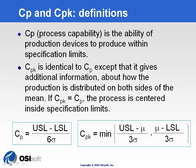CPK takes into account that your process may not be centered on your target value — there could be a slight shift between the average of the process and the target value. Whichever side, upper or lower, is smaller due to that shift is taken into account by CPK. CPK cannot be greater than CP; it is equal to or less than CP, making it a higher constraint on the process to truly assess its capability.